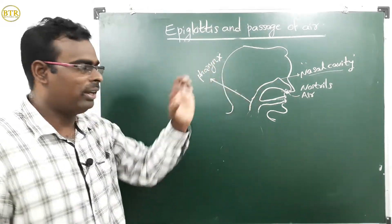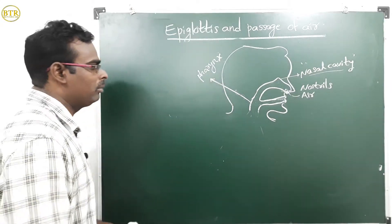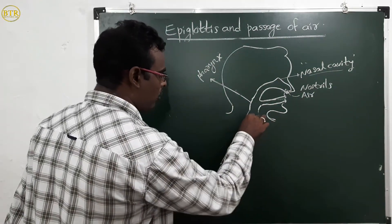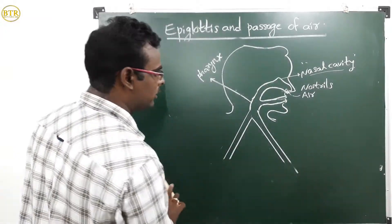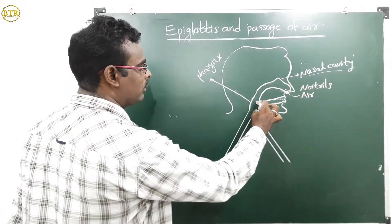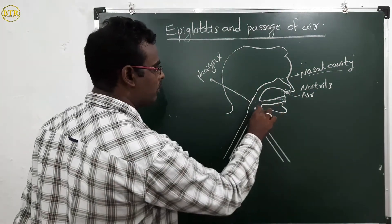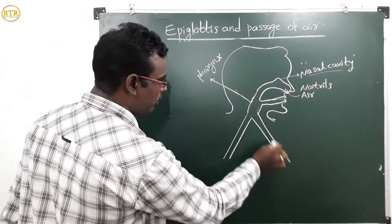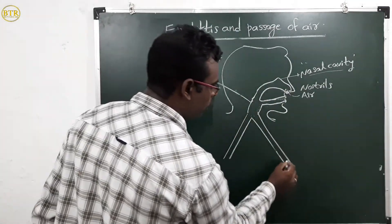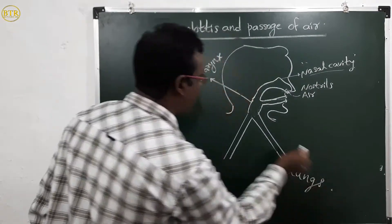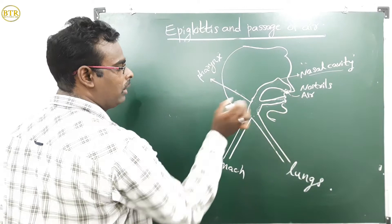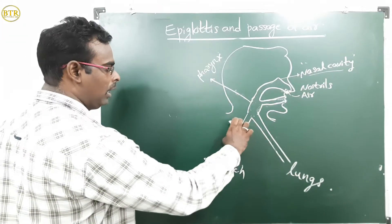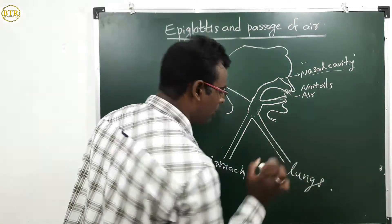At the region of the pharynx, there is one tricky problem. From the pharynx, there are two ways. One way goes to the lungs, and the other way goes to the stomach. The tube-like structure going to the lungs is called the windpipe, and the other is the food pipe. So one way goes to the stomach and the other goes to the lungs.